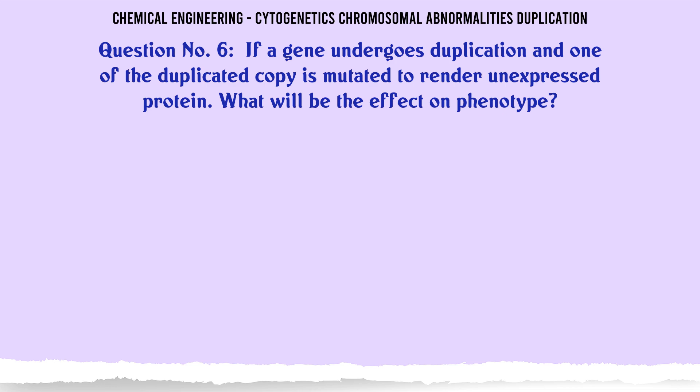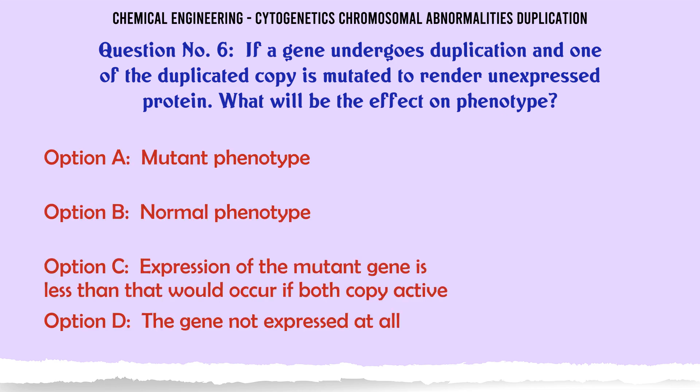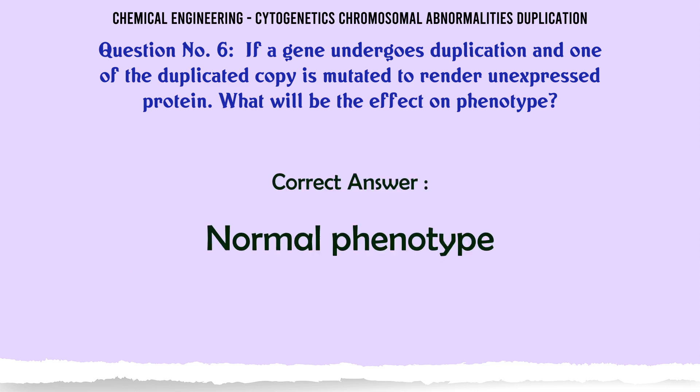If a gene undergoes duplication and one of the duplicated copies is mutated to render an unexpressed protein, what will be the effect on phenotype? A: mutant phenotype. B: normal phenotype. C: expression of the mutant gene is less than that would occur if both copies were active. D: the gene is not expressed at all. The correct answer is normal phenotype.